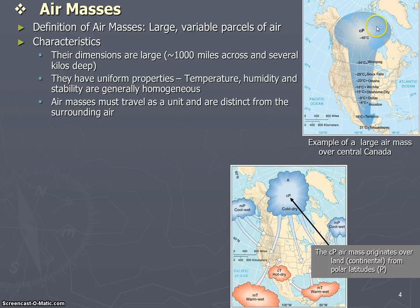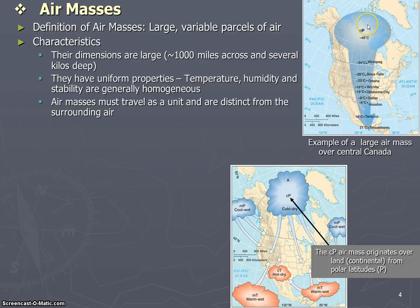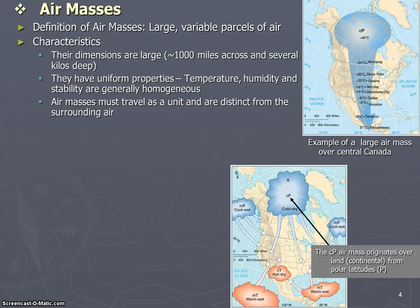What would you expect from continental polar air? Continental air, as opposed to an air mass that originates over an ocean, is going to be dry. And in terms of temperature, polar is obviously going to be a colder air mass. This air mass is going to be somewhat stable as well, so the temperature, humidity, and stability are similar all along the air mass.